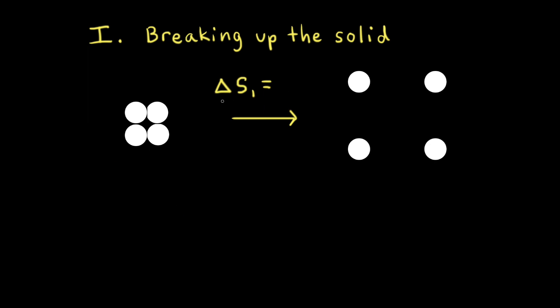Next, let's think about the change in entropy, delta S-1, for the first step. When the solid is broken up, the particles have a greater number of possible positions. An increase in the number of possible positions means an increase in the number of possible microstates. An increase in the number of microstates means an increase in entropy. Therefore, breaking up the solid means an increase in entropy, and delta S-1 will be positive.